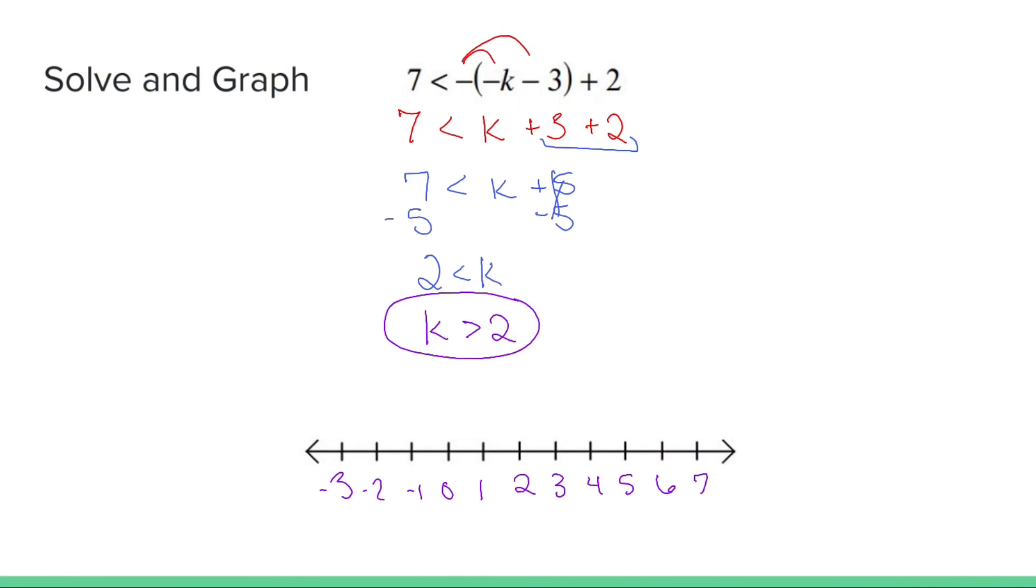To graph k is greater than two, I put a circle at two and don't fill it in. If you fill it in, you are saying that we're including two, but we don't want to include two. If k is greater than two, then I'm going to highlight everything to the right side of it like so.